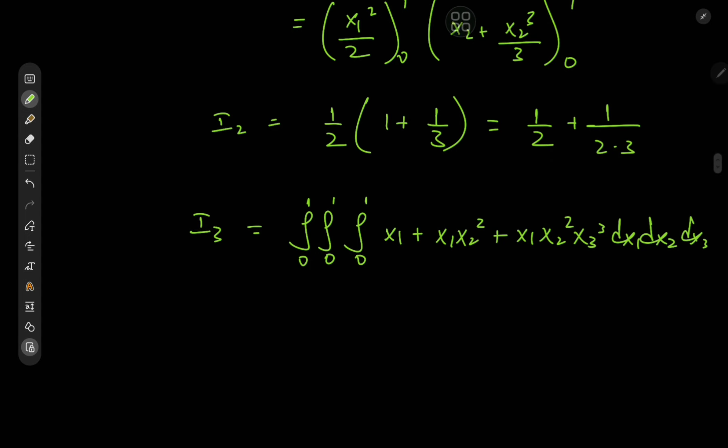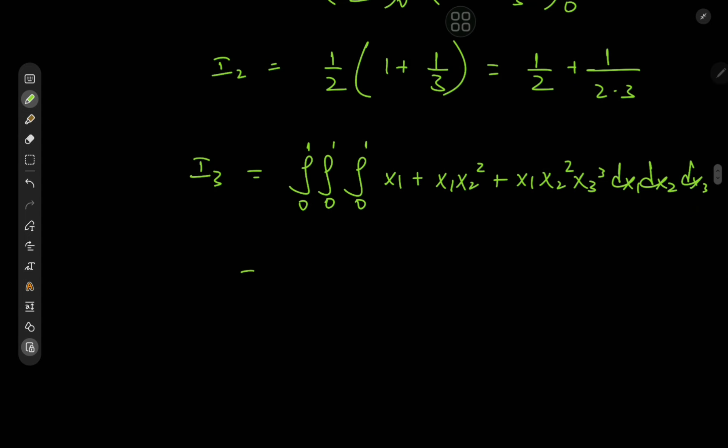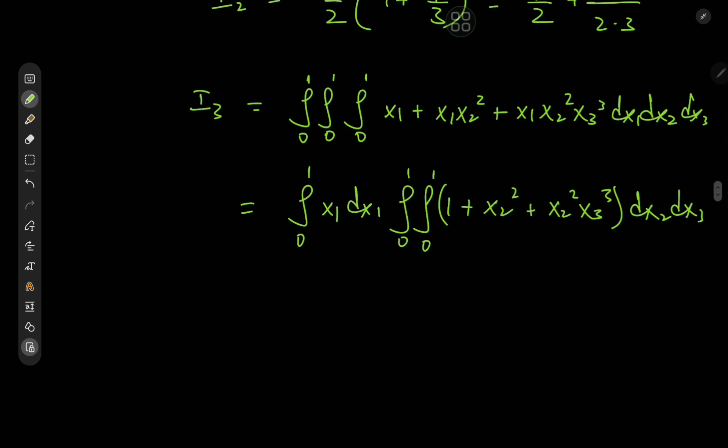And again we see we can factor out the x1. So that means again we could separate the integrals. In this case we have an integral from 0 to 1 of x1 dx1 times the double integral from 0 to 1 of 1 plus x2^2*x3^3 dx2 dx3.